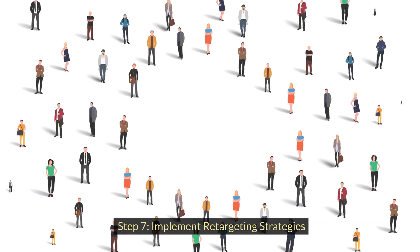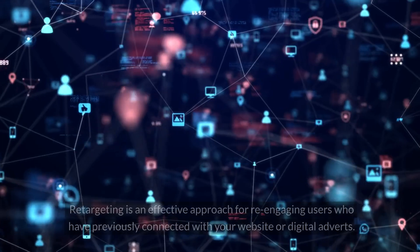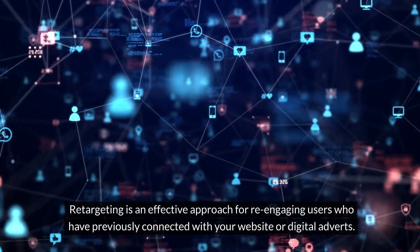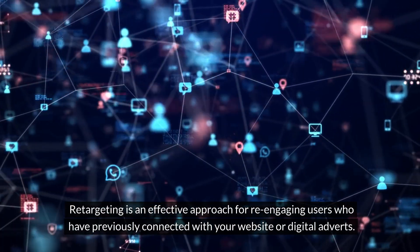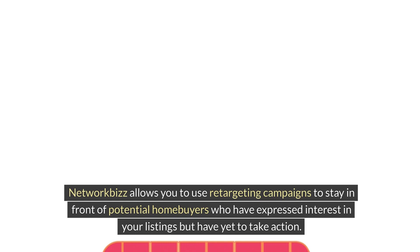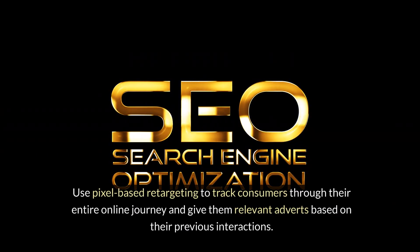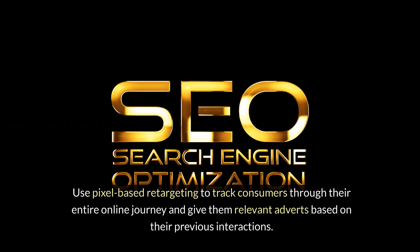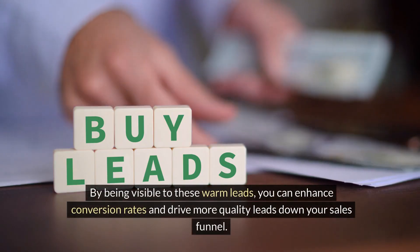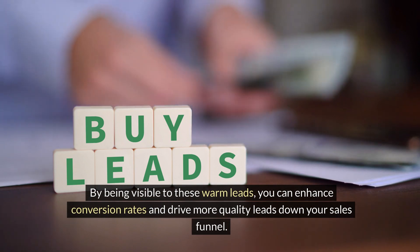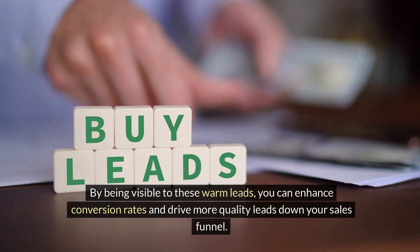Step 7: Implement retargeting strategies. Retargeting is an effective approach for re-engaging users who have previously connected with your website or digital adverts. Network Biz allows you to use retargeting campaigns to stay in front of potential home buyers who have expressed interest in your listings but have yet to take action. Use pixel-based retargeting to track consumers through their entire online journey and give them relevant adverts based on their previous interactions. By being visible to these warm leads, you can enhance conversion rates and drive more quality leads down your sales funnel.